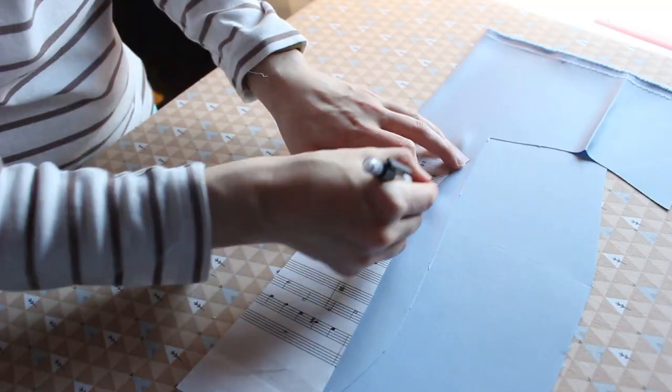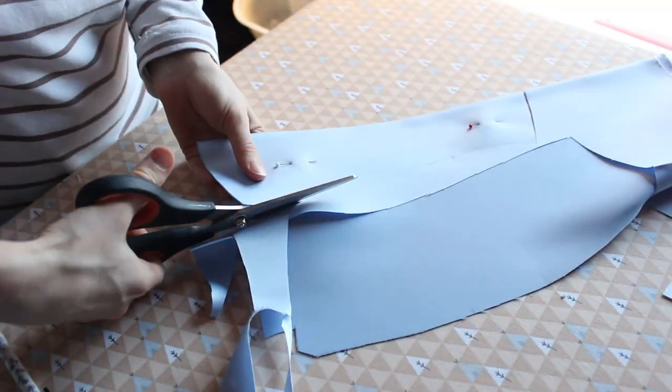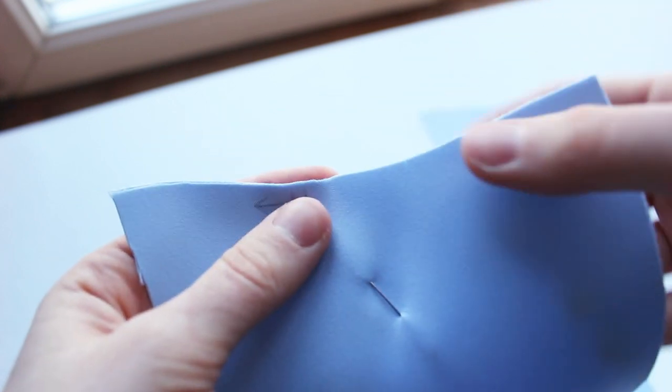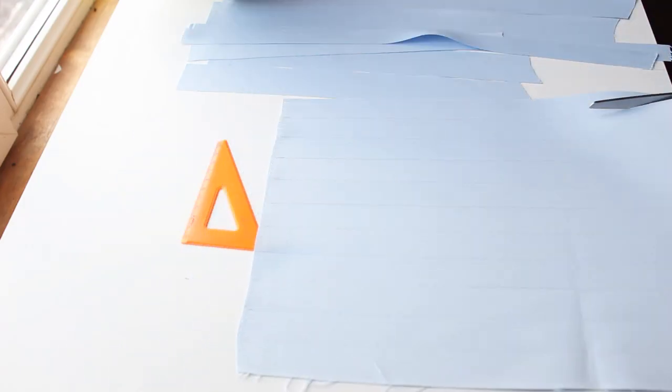I marked the notches for the waistline and for the boning channels on all pieces. You can see how I marked each panel with its number and an arrow that shows which way is the front, so I wouldn't sew the panels the wrong way.